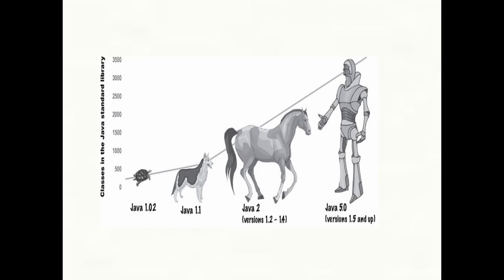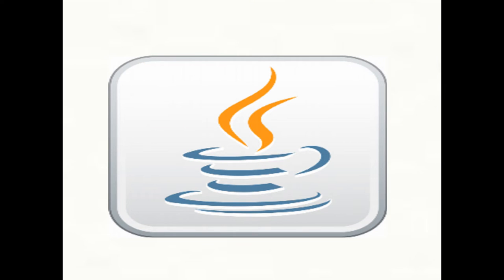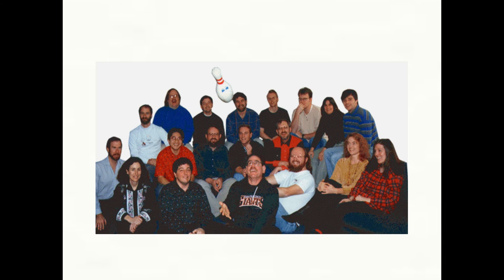Here are the major points that describe the history of Java. James Gosling, Mike Sheridan, and Patrick Naughton initiated the Java Language Project in June 1991. The small team of Sun engineers was called Green Team.